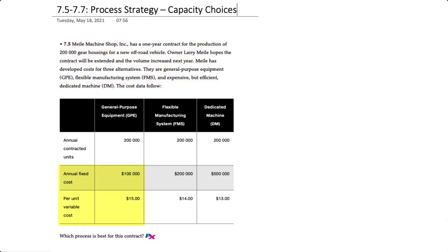The first is general purpose equipment with an annual fixed cost of $100,000 and a variable cost of $15 per unit. The second is using a flexible manufacturing system or FMS with an annual fixed cost of $200,000 plus a variable cost of $14 per unit. And third is a dedicated machine process with an annual fixed cost of $500,000 and a variable cost of $13 per unit.